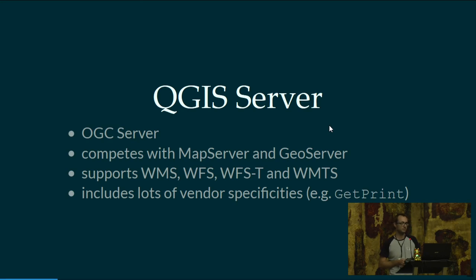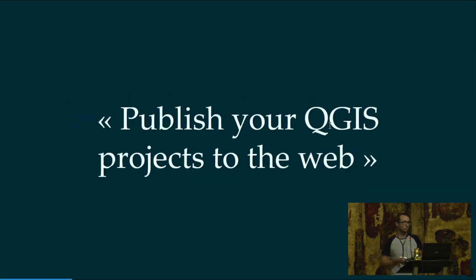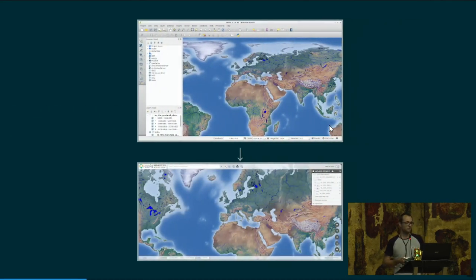One of the particularities of QGIS server is that it includes lots of vendor-specific parameters and requests, which makes it very flexible for developing applications. For example, there is a GetPrint request that you can use for printing maps to PDFs — very convenient for your applications. What QGIS server really is about is publishing your QGIS projects to the web. You design and create your maps using QGIS desktop, save the map as a QGIS project, and then reuse it with QGIS server to publish it to the web.